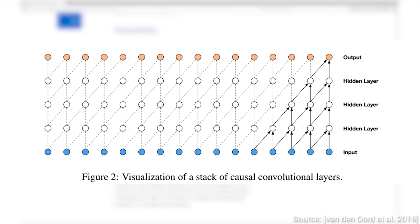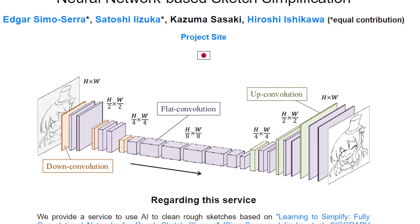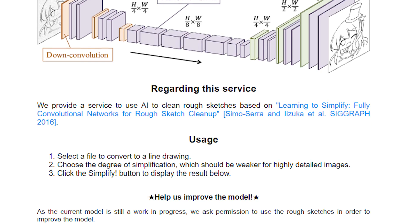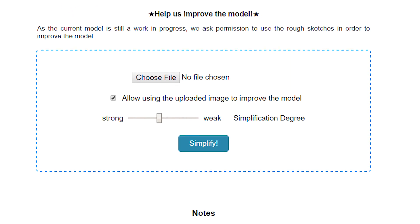We have seen in a DeepMind paper earlier that used dilated convolutions for state-of-the-art speech synthesis — that is a novel convolution variant — and this piece of work is no exception either. There's also a cool online demo of this technique that anyone can try. Make sure to post your results in the comments section!